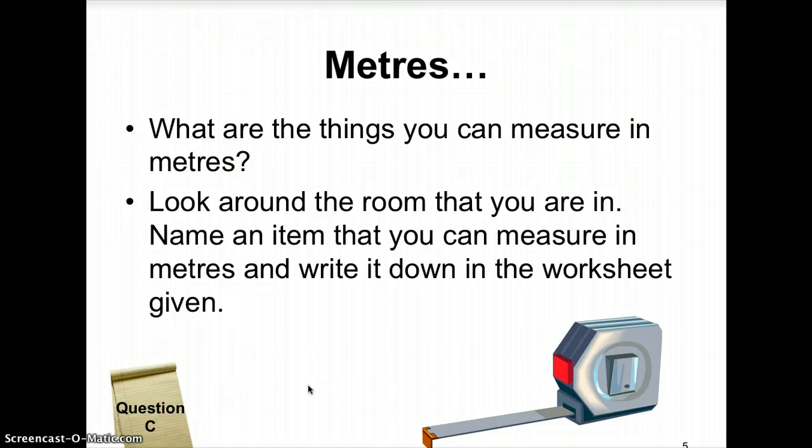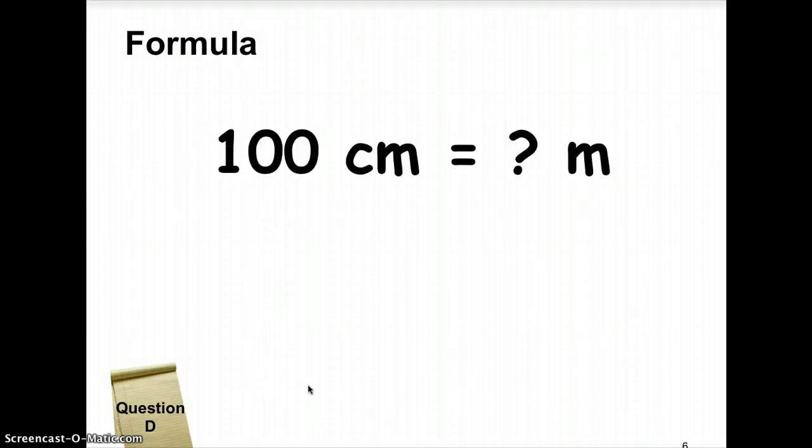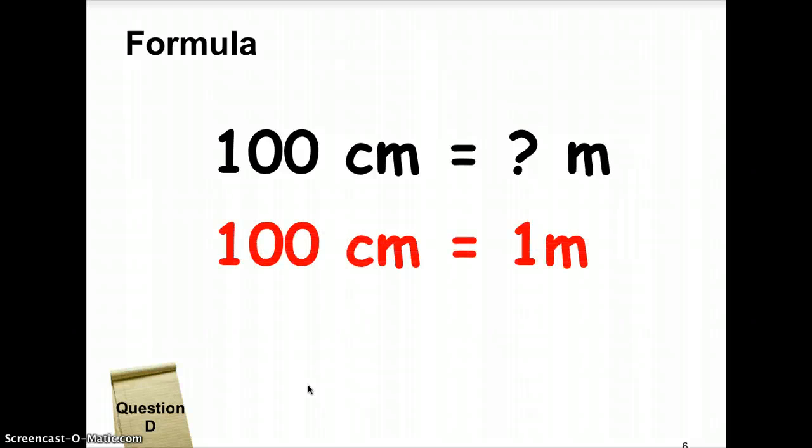Are you ready to move on? Now, this formula for length is extremely important. 100 cm or centimeters is equals to how many meters? It is 100 cm equals to 1 meter. Do remember that this is extremely important. And this also means that in 1 meter, there are altogether 100 centimeters. Do remember this. And once again, answer question D that is found in your worksheet.